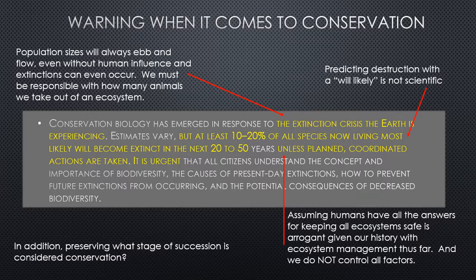The textbook claims 10 to 20 percent of all living species 'most likely will become extinct in the next 20 to 50 years.' Predicting destruction with 'will likely' is not scientific — you can't put percentage ranges and 'will likely' alongside specific timeframes in the same sentence. We don't even know all the species that exist, so claiming 10 to 20 percent seems inaccurate, especially given unexplored areas like the deep sea and glacial lakes.